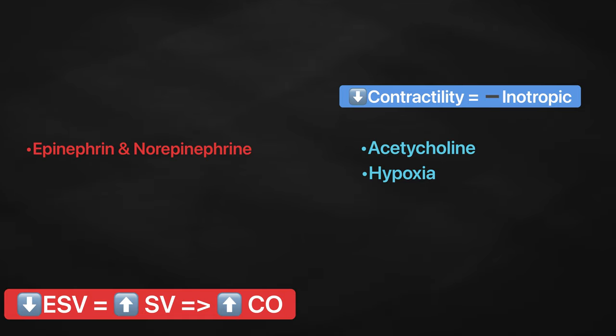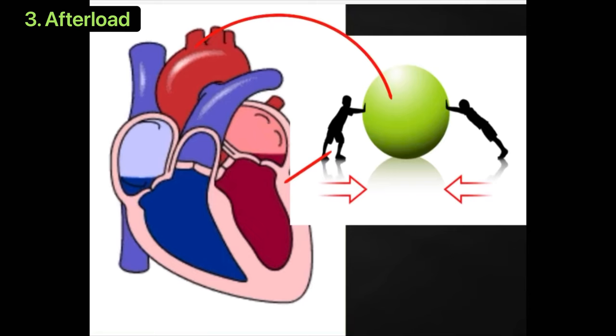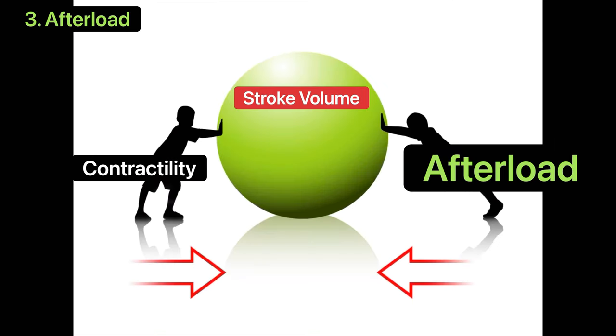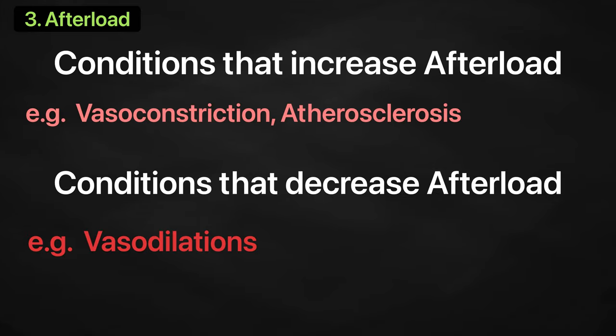Alright, the third stroke volume determinant is the afterload. Afterload refers to the tension or force that the ventricles must develop to pump blood effectively against the resistance in the vascular system. Any condition that increases resistance such as vasoconstriction or the disease atherosclerosis requires a greater afterload to force open the semilunar valves and pump the blood.